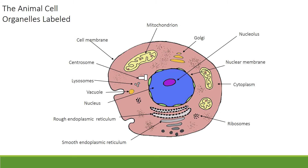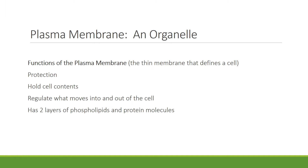Here is a labeled animal cell. Look back at slide number two and see if you correctly labeled the animal cell on that slide. One cell organelle is the plasma membrane. Its job is to protect, to hold in the cell contents, to regulate what moves into and out of the cell.